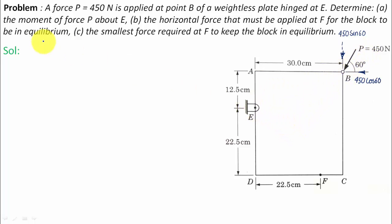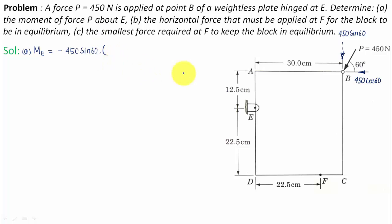Part A: the moment of force P about point E. Consider the force 450 sin 60 — keep your thumb at E and try to move your baby finger in this direction; you'll realize this force produces a clockwise moment, so we put a negative sign. That gives us negative 450 sin 60, multiplied by the perpendicular distance. We drop a perpendicular from point E onto the line of action of 450 sin 60, and that perpendicular length is 30 centimeters.